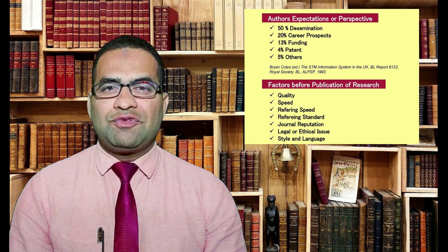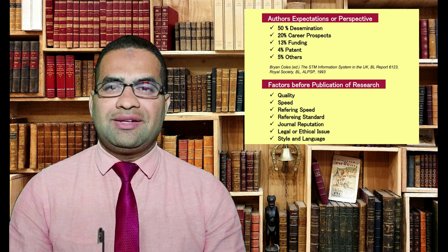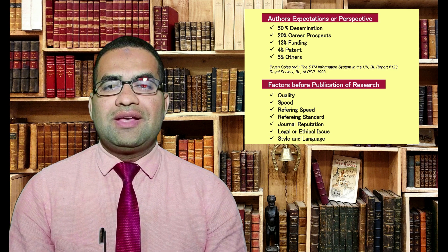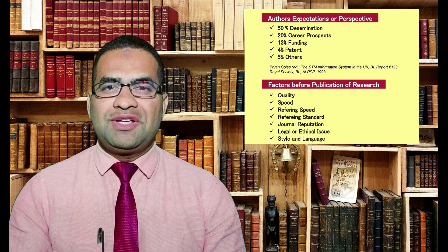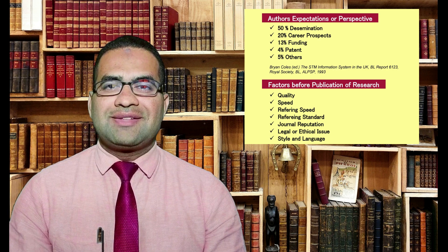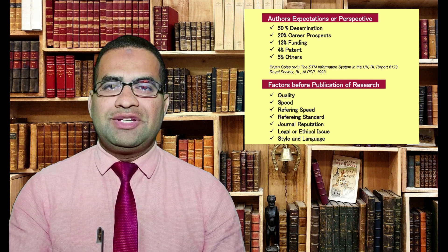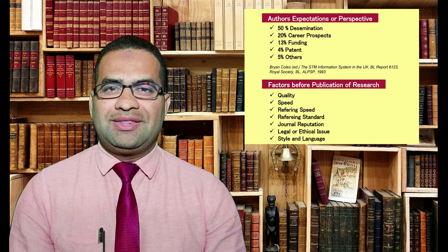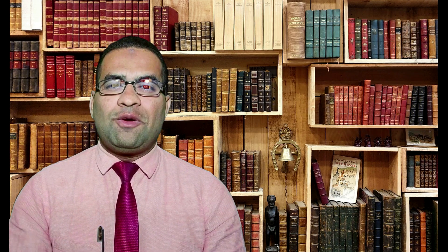The next important thing is style and language. You have to refer to the journal's author guide for notes on style. Some authors write the paper with a specific journal in mind, whereas others write the paper and then adapt it to fit the style of a journal they subsequently choose. The main objective is to report your findings and conclusions in as clear and concise a way as possible.